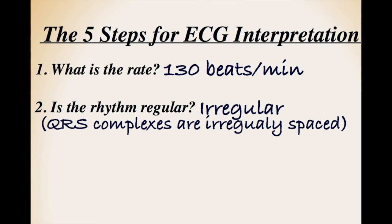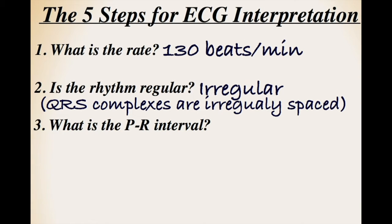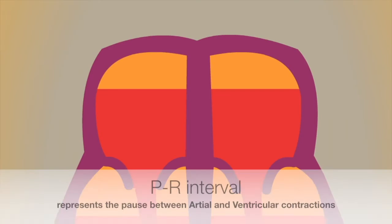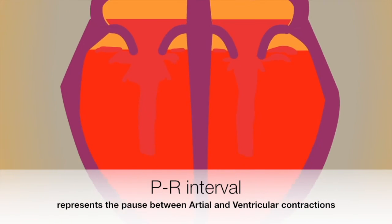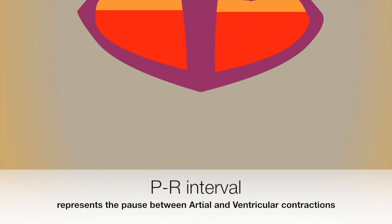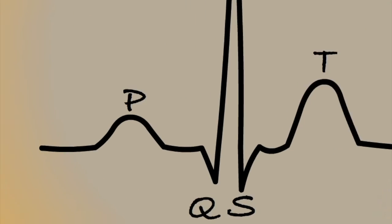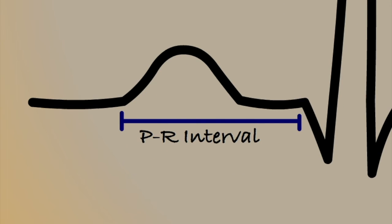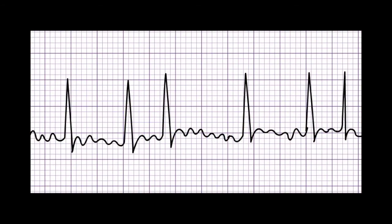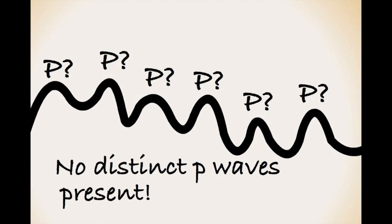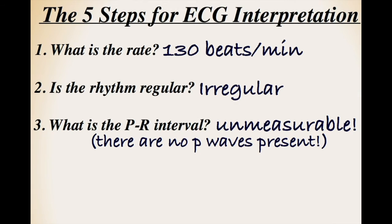Step 3 is to calculate the PR interval. The PR interval represents a pause that occurs between the atrial and ventricular contractions. It is measured from the start of the P-wave to the start of the QRS complex. However, in this ECG there are no clearly defined P-waves. Instead, we have a lot of small irregularly sized waves. The lack of clearly defined P-waves makes it impossible to calculate the PR interval.